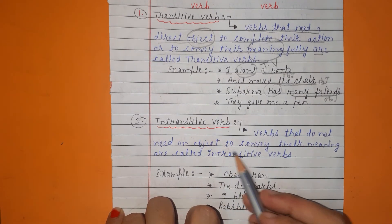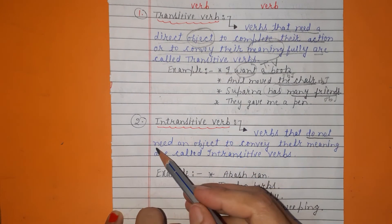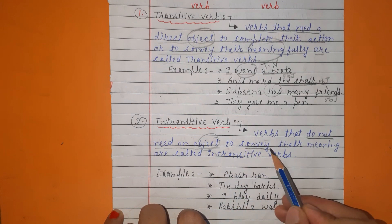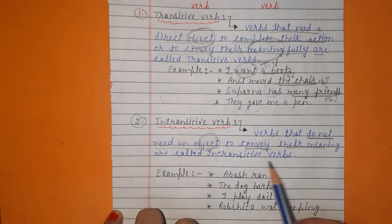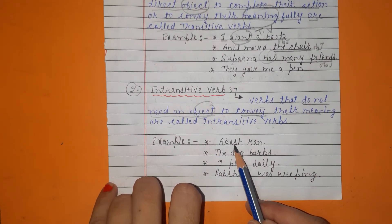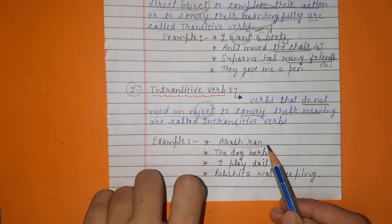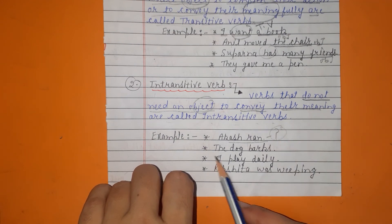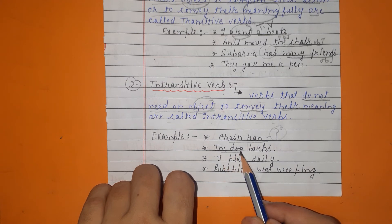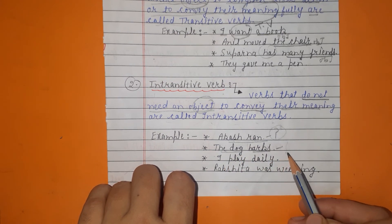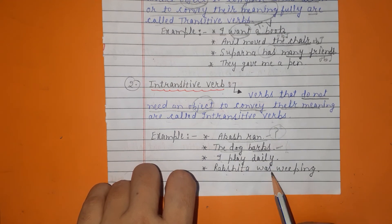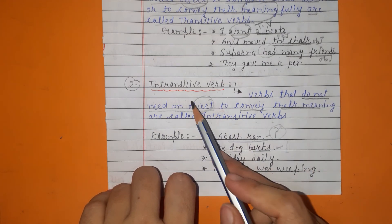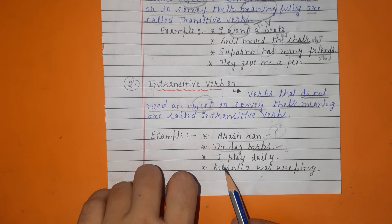The second type is intransitive verb — this is the opposite of transitive. Verbs that do not need an object to convey their meaning are called intransitive verbs. For example: 'Akash ran.' The sense is clear in itself — no object is required. 'The dog barks' — the meaning is clear. 'I play,' 'Rakshita was weeping.' Verbs which do not require any object to make their meaning clear are called intransitive verbs.